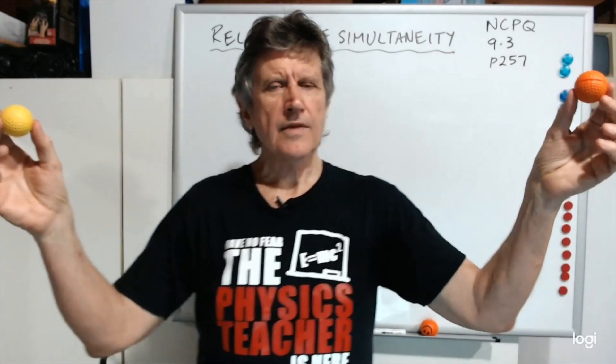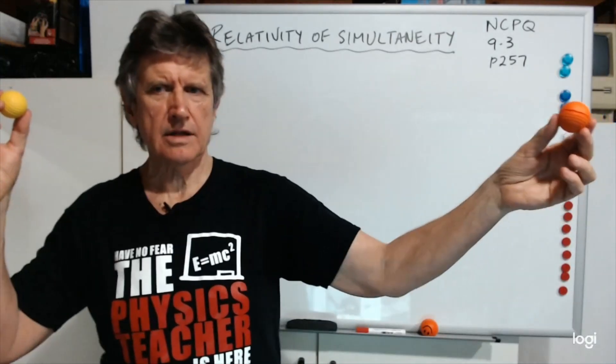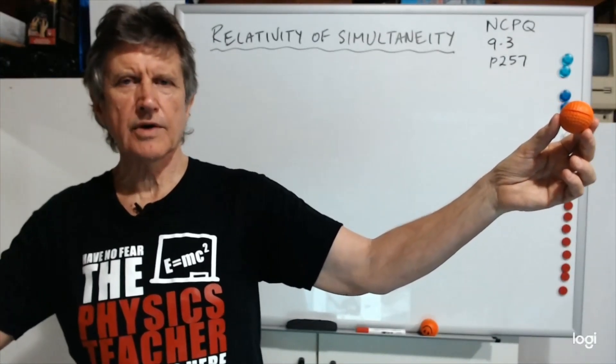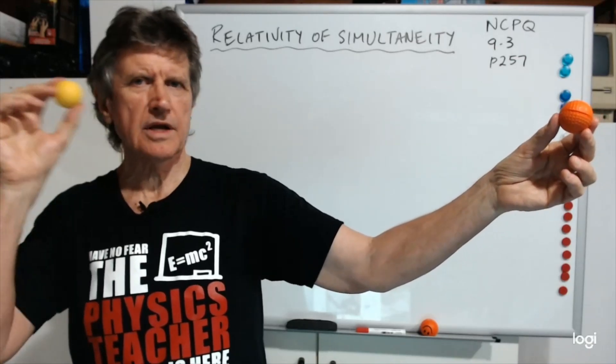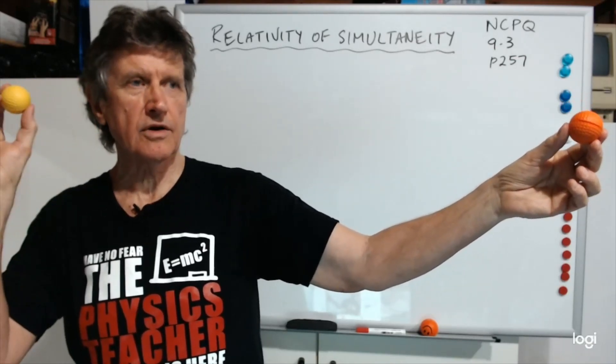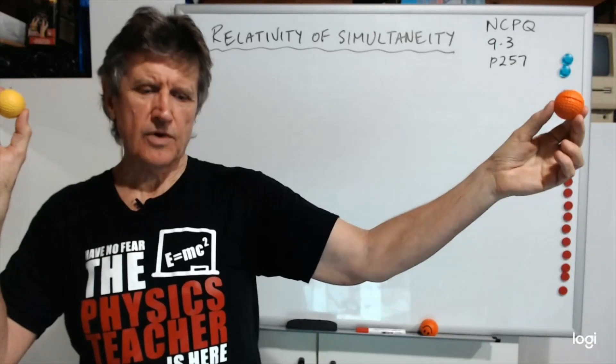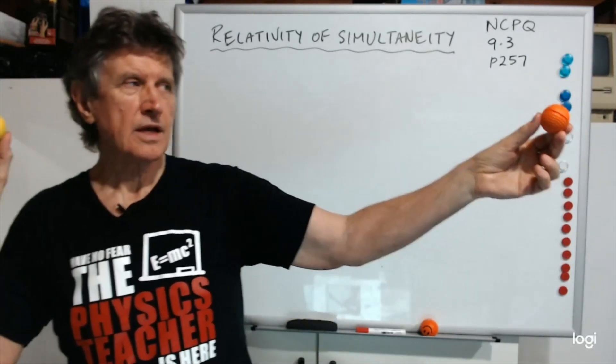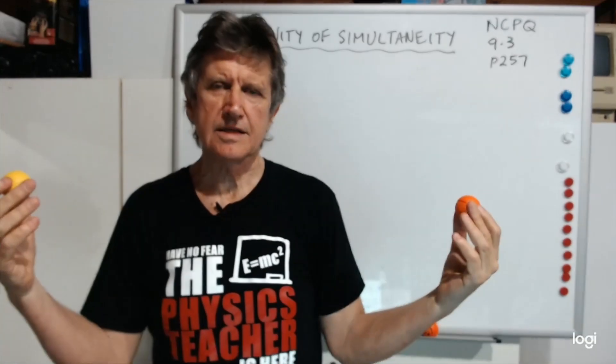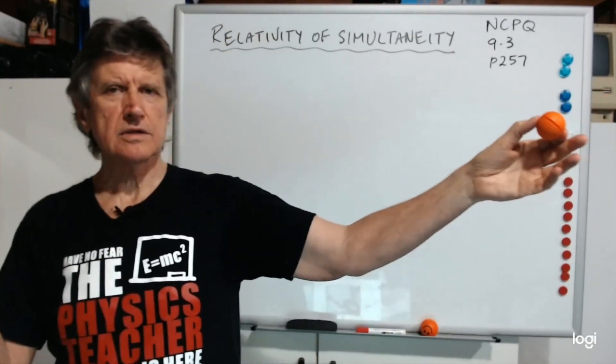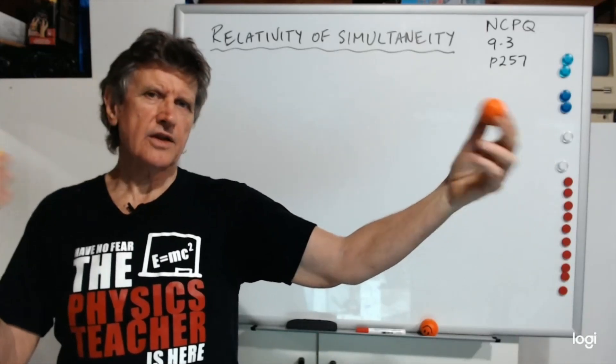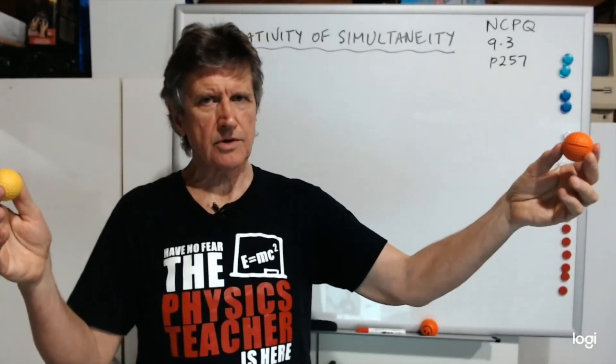If you're closer to one bell than the other, you're going to hear this yellow bell ring first. The sound waves only has to go a short distance to get to your ear. The sound wave from the orange one has to go all this way to get to your ear. But if you know the distance you are from each of the bells and you know the speed of sound, you can work out the time delay, and you can judge whether they would have gone off at the same time or not.